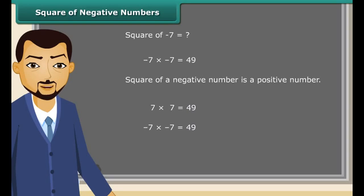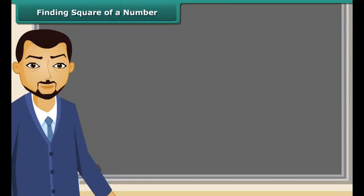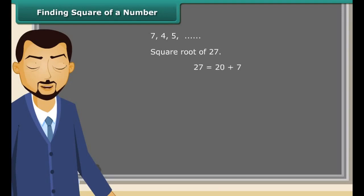Now let us learn about square roots. We can easily find the squares of small numbers like 7, 4, 5, etc. But is it easy to find the square of 27 so quickly? Let us find how we may calculate it. We know 27 is a sum of 20 and 7, therefore the square of 27 is equal to (20 + 7) whole squared.